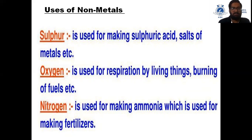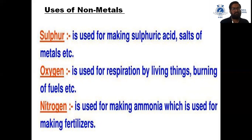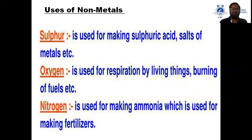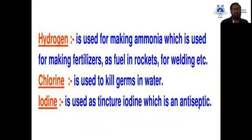Now we will study some uses of non-metals. Sulfur is used for making sulfuric acid, which is very important industrially — when a country's production of sulfuric acid is high, its GDP is also high. Oxygen is used for respiration by living things and for burning of fuels. Nitrogen is used for making ammonia, which is used for making fertilizers. Hydrogen is also used for making fertilizers, as fuel in rockets, and for welding.